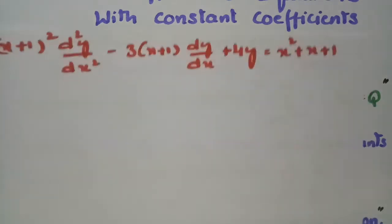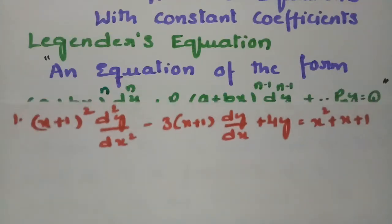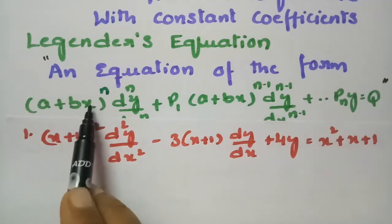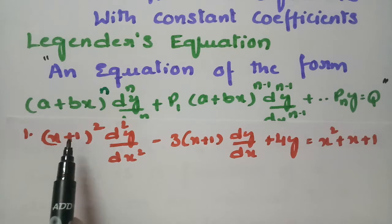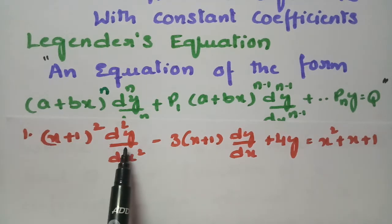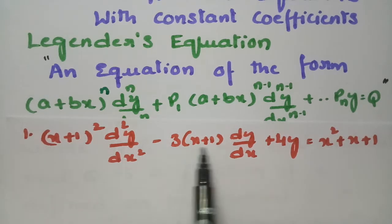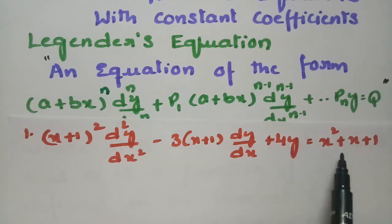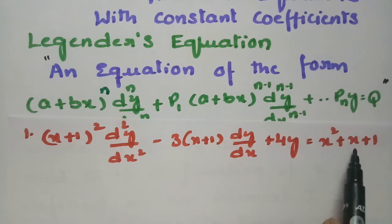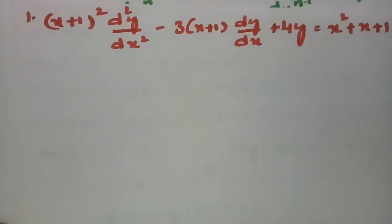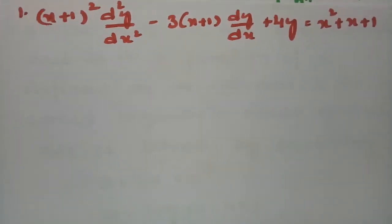The equation is of the form (a + bx), specifically (x + 1)^2 · D² minus 3(x + 1) · D + 4 of y equals x² + x + 1. I'll use all the substitutions and work through the solution.